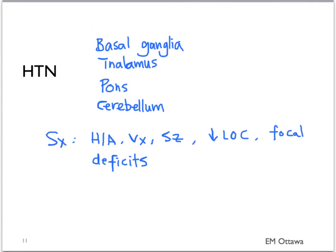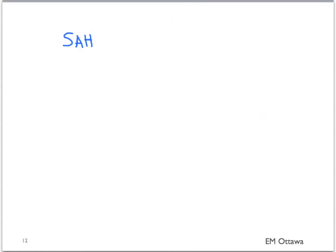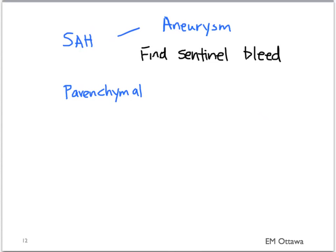The risk of intracerebral bleeds also increases with the use of sympathomimetic drugs. In summary, we discussed subarachnoid hemorrhage and intracerebral hemorrhage. Both can be caused by trauma; however, we need to worry about aneurysms causing subarachnoid hemorrhage, and we want to pick up sentinel bleeds before the aneurysm ruptures. For parenchymal bleeds, the main risk factor is hypertension. In the next part, we will discuss the physical examination and investigations. Thank you for watching.